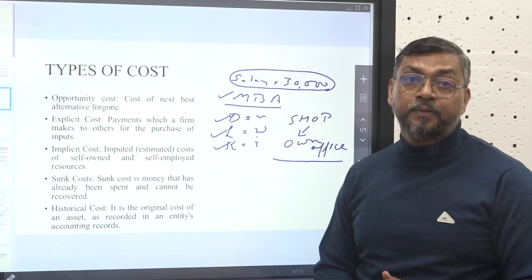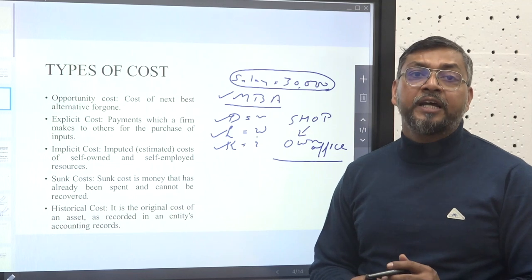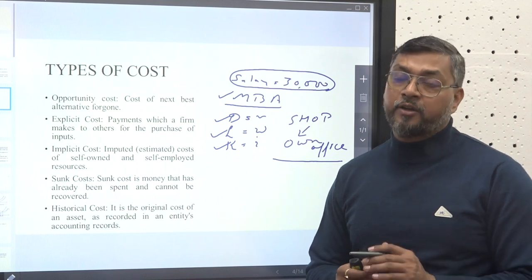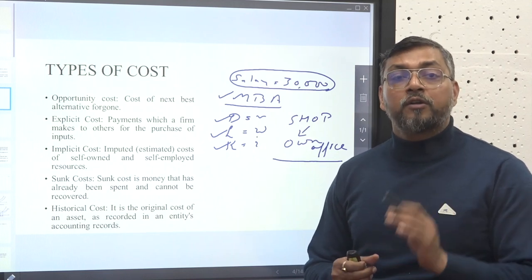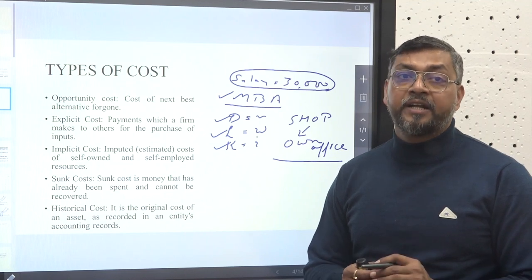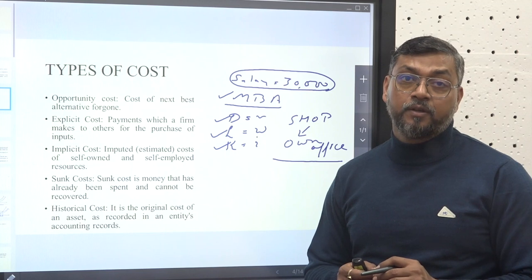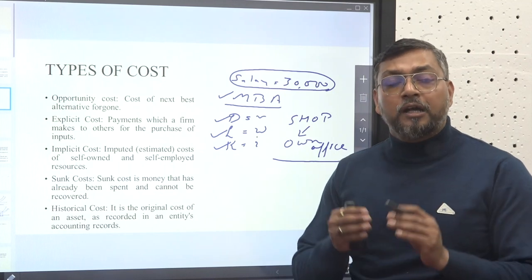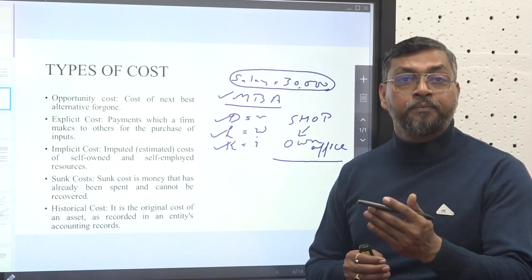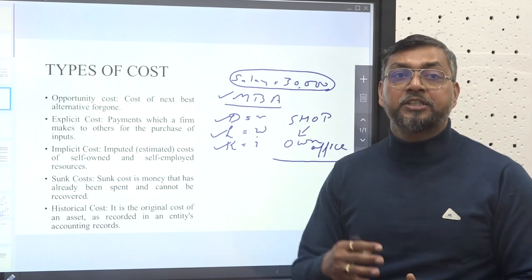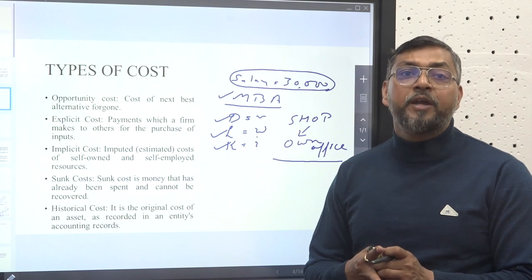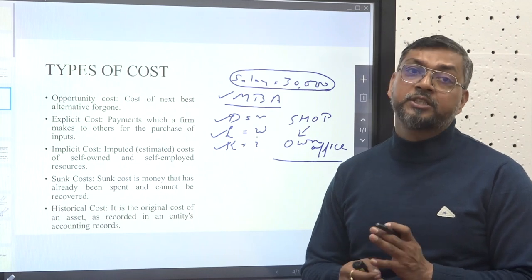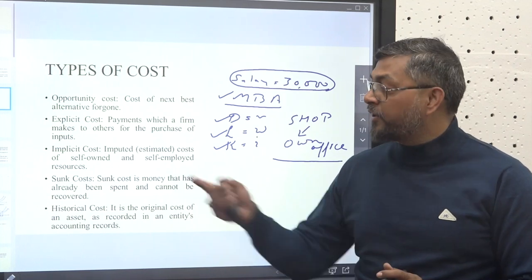Another concept is sunk cost. Sunk cost is the money that has already been spent by the producer and cannot be recovered later on. For example, for launching a product you decide to do marketing research, so you pay a set amount to the research firm. Once the research is done and you get the results, you won't be able to recover that cost even if you don't start that particular business. That is known as sunk cost.